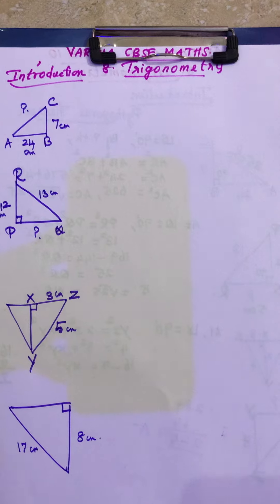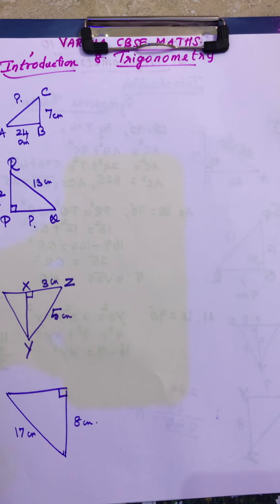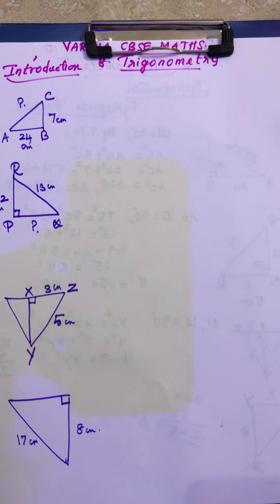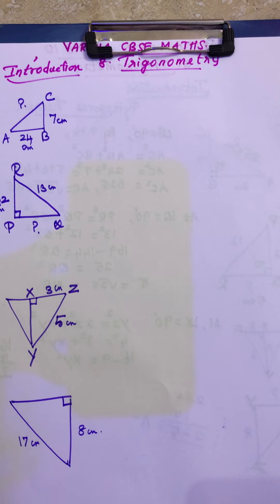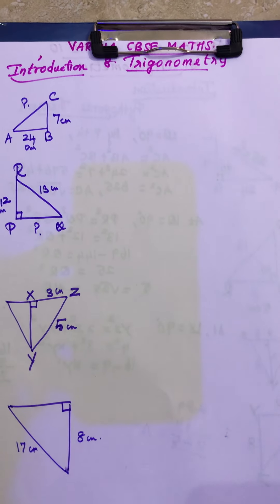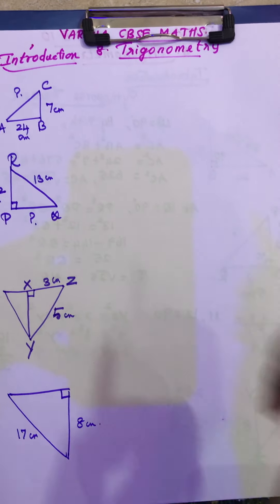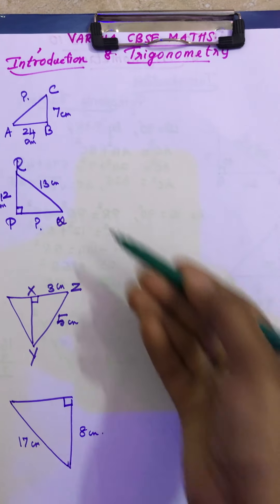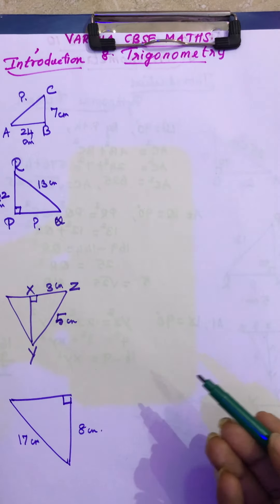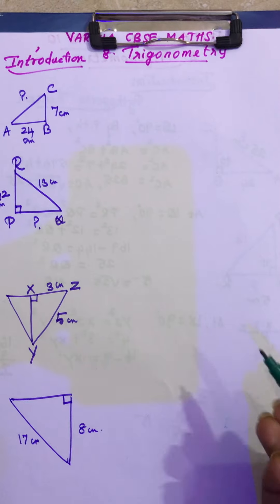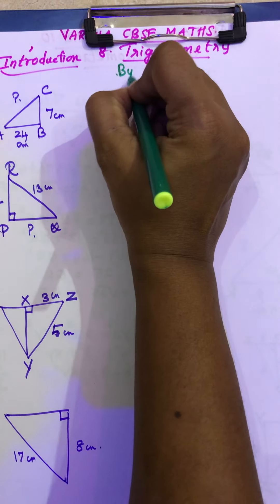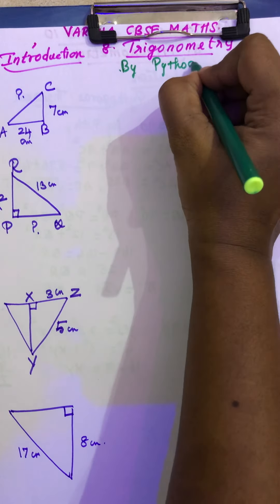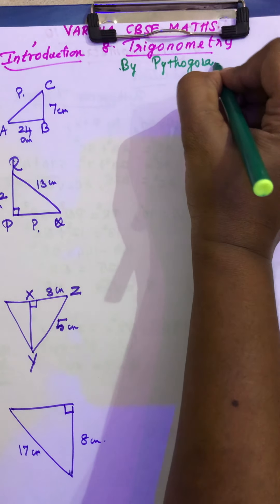These are the basic things — Pythagoras theorem — how to find a side by the theorem. One of the sides is not given, so we are going to find the other side. I have given four triangles, and in these four triangles one of the sides is not given. By Pythagoras theorem, we are going to find the other two sides.